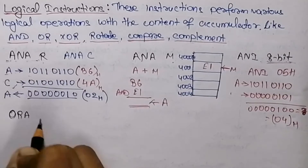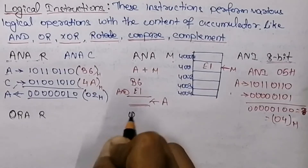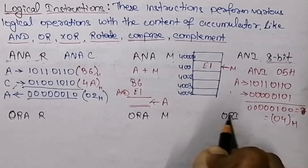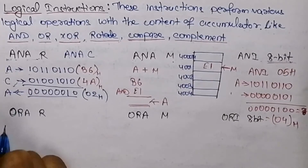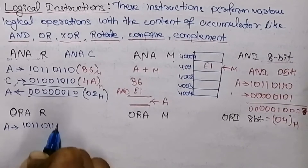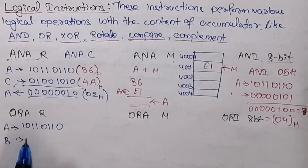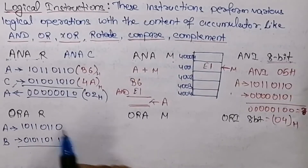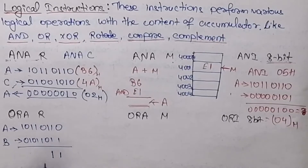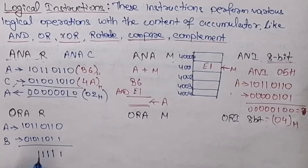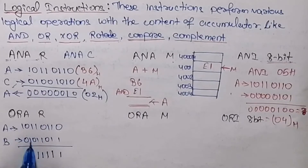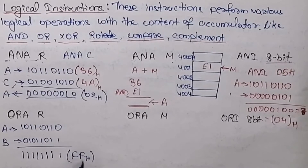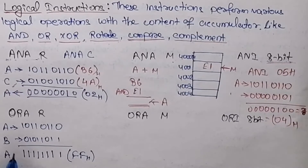For the OR operation, we have ORA r for performing the OR with any register, ORA M for performing OR with memory, and ORI 8-bit data for performing OR with an 8-bit immediate value. Taking the same accumulator content and a register B with a given value, if we perform the OR operation — where the result is 1 if either bit is 1 — we get all 8 bits as 1, giving us FFh stored in the accumulator.